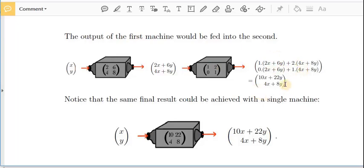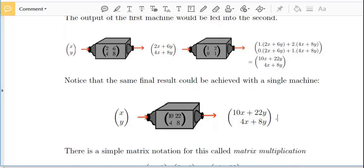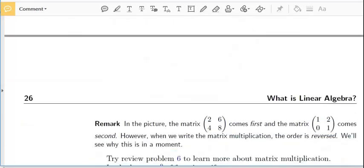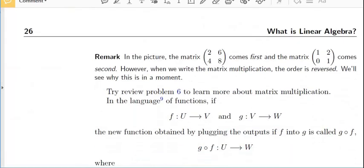And here we get a result. And notice that this result here could be written like this, can be expressed as the product of a single matrix times xy. I can consider this as 10, 4 times x plus 22 to 8 times y. So I express it by this matrix, 10, 4, 22, 8. So this is what we call matrix multiplication.